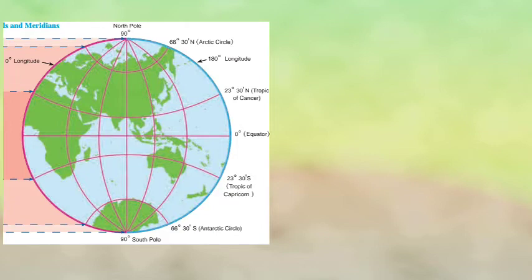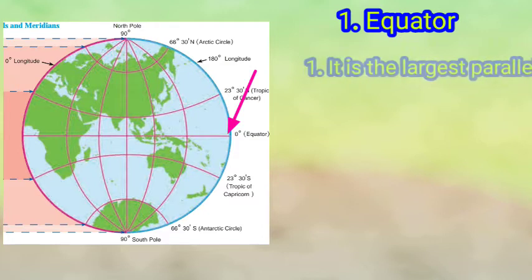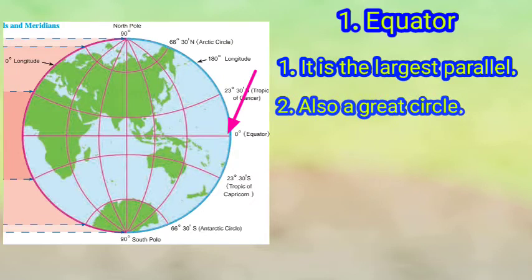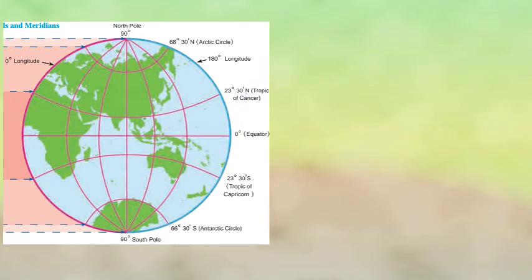Observe the figure — you can see some important parallels of latitude. Number one: the zero degree parallel, or the Equator. It is the largest parallel and also a great circle. This great circle divides the Earth into two equal parts, which is why it is considered the zero degree parallel.